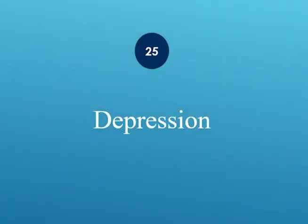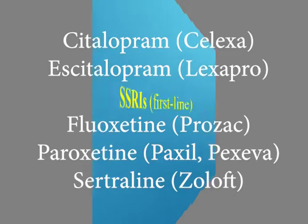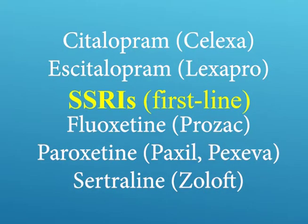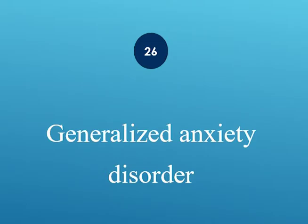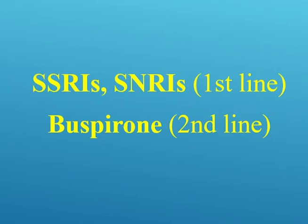Depression treatment: the first-line treatment is SSRIs, such as citalopram, escitalopram, fluoxetine, paroxetine, and sertraline. Generalized anxiety disorder (GAD): first-line, use SSRIs or SNRIs. Second-line, use buspirone.